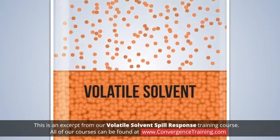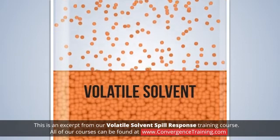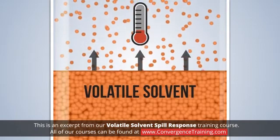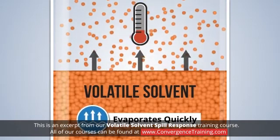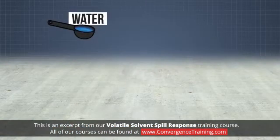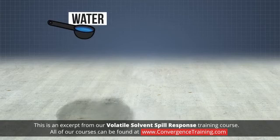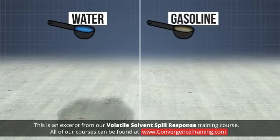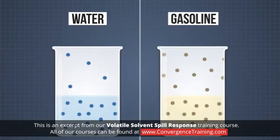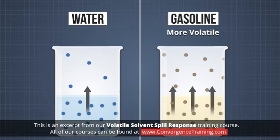A volatile solvent is a liquid in which the molecules in the liquid easily move into the air at room temperature. Stated another way, the liquid evaporates quickly. For example, a tablespoon of water dropped on cold concrete will create a dark spot which will last for several minutes before drying or evaporating away. The same amount of gasoline will create a spot which starts to shrink almost immediately and then evaporates and disappears in less than a minute. Gasoline is therefore a more volatile liquid than water.